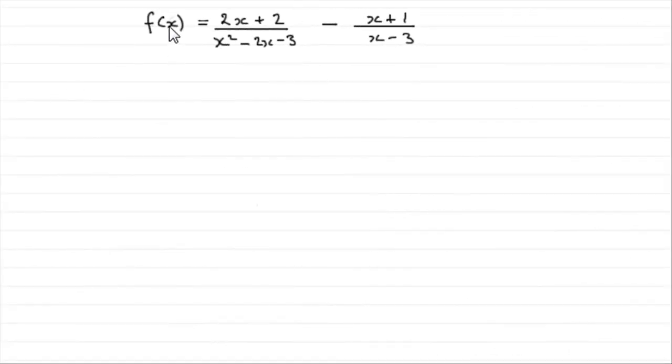Now in this part of the question we're given that f(x) equals 2x plus 2 all divided by x squared minus 2x minus 3, minus x plus 1 all divided by x minus 3, and asked to simplify f of x as a single fraction.